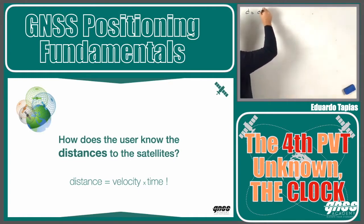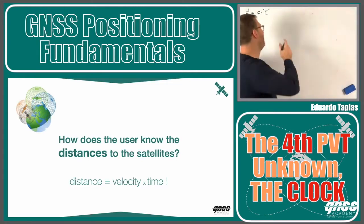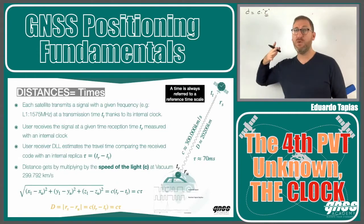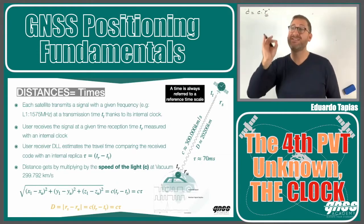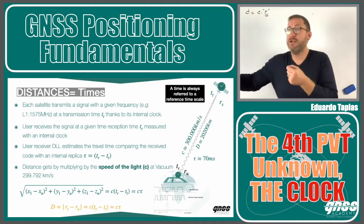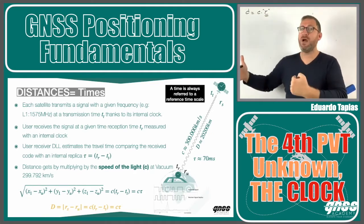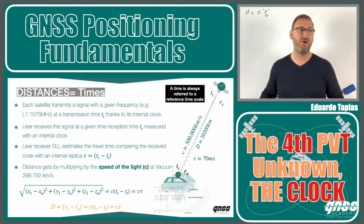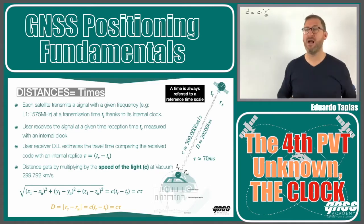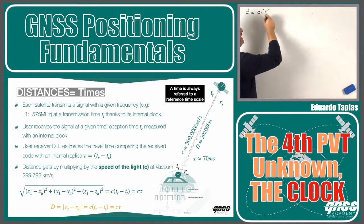If I know this tau, I have the distance. The question is: how does the receiver estimate tau? The satellite will transmit a signal at what we call a transmission time. The receiver will receive the signal at reception time. In between, we have what we call the travel time, or time of flight of the signal. We multiply these to get tau.